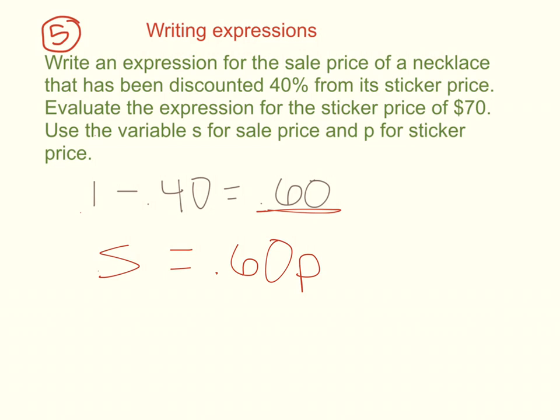The expression part is right here because the expression is to be used to evaluate the sale price for the sticker price of $70. So, my sale price is found by substituting $70 into the P. We're going to do 0.60 times 70, 60% of 70. My sale price, when I multiply 60% of 70, is going to be $42.